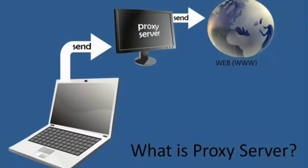Proxy servers can be used for HTTP — which covers websites — for SMTP for emails, for FTP, and so on. They can also be configured at the socket level, allowing all internet traffic including peer-to-peer file transfers to go through the proxy server. But today we're not going that deep — this is Proxy Server 101 and Anonymous Browsing 101, so we'll focus on how to just search the web anonymously.